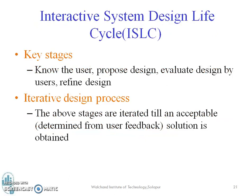Now, the interactive system design life cycle. The primary stages are: know the user, propose the design, evaluate design with users, and then refine the design. It is basically an iterative design process — the above stages are iterated until an acceptable solution is obtained.